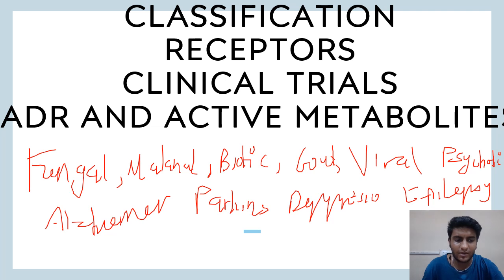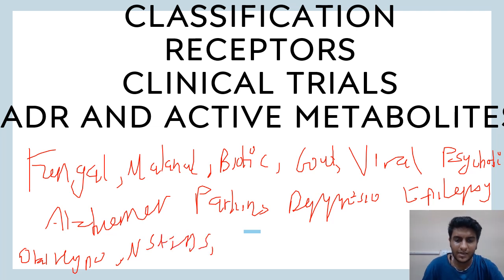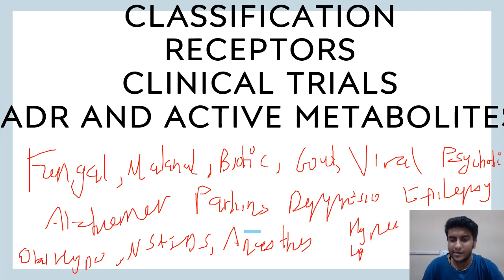From the cardiovascular system and the endocrine system, oral hypoglycemics are important. From anesthetics, both general and local anesthetics are to be covered. You should also know anti-hypertensives, anti-hyperlipidemics, anti-arrhythmics, and anti-angina agents.